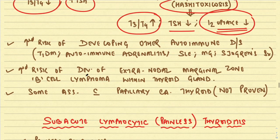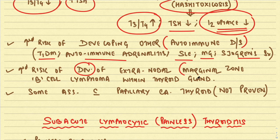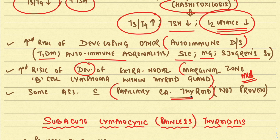There is an increased risk of developing other autoimmune diseases in Hashimoto's thyroiditis — type 1 diabetes mellitus, autoimmune adenolitis, SLE, myasthenia gravis, Sjögren's syndrome. There is also an increased risk of extranodal marginal zone B-cell lymphoma within the thyroid gland — a very important MCQ. Because of extensive lymphoid proliferation, the polyclonal population may acquire a mutation and become monoclonal, giving rise to this lymphoma. Some cases are also associated with papillary carcinoma of the thyroid, though not yet proven.